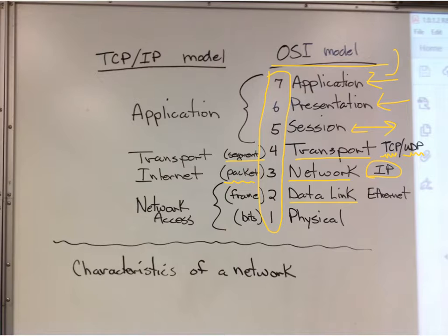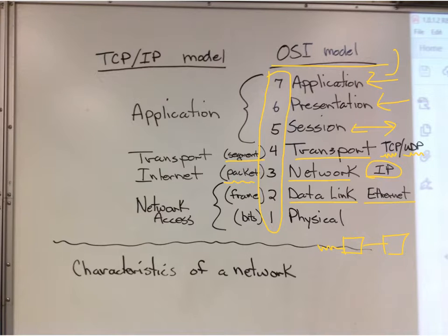Data link — we're going to link our two devices together. Maybe you have a couple switches, we'll link them together, or you have some device connected into the switch. We talked a little bit about Ethernet. Then the physical layer — how are the bits going to be represented? At the data link we have a frame; at the physical layer we just have the bits.